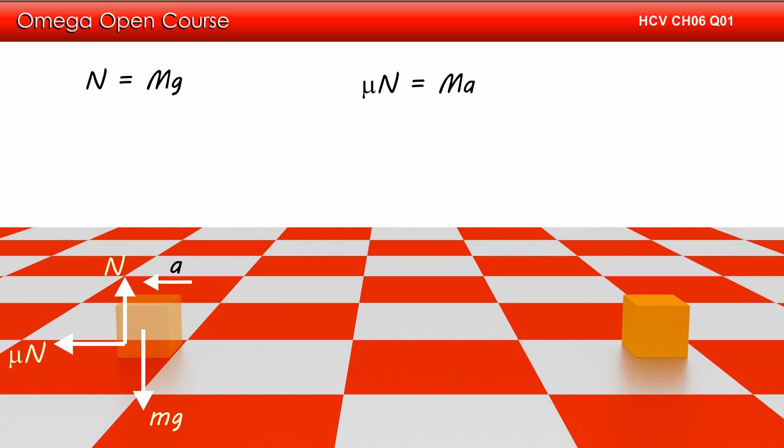Net force in horizontal direction must be equal to mass times acceleration of the block. Therefore, μN must be equal to ma.